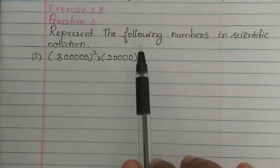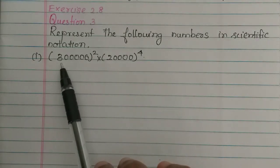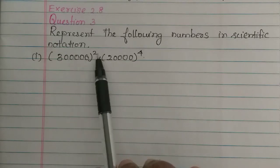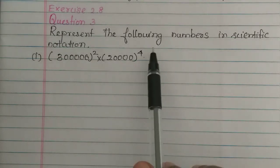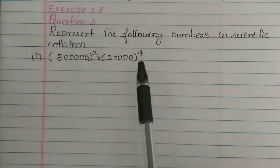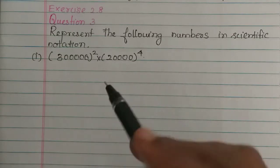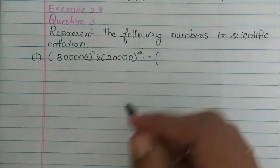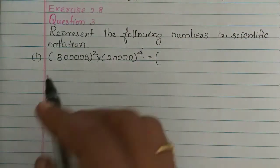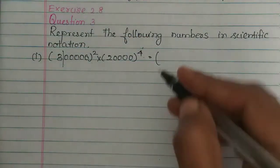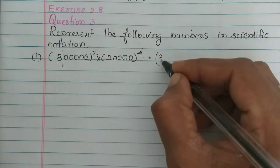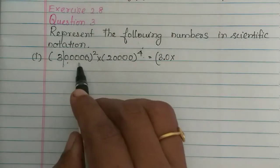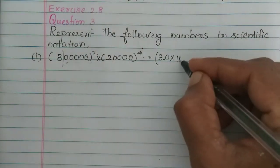So we will study scientific notation. The first number is 3 lakh — that is 3 followed by 5 zeros — which equals 3.0 × 10 to the power 5.